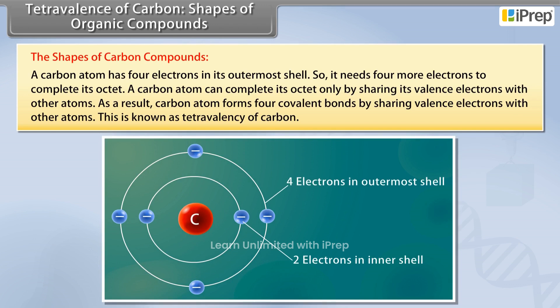A carbon atom can complete its octet only by sharing its valence electrons with other atoms. As a result, carbon atom forms 4 covalent bonds by sharing valence electrons with other atoms.